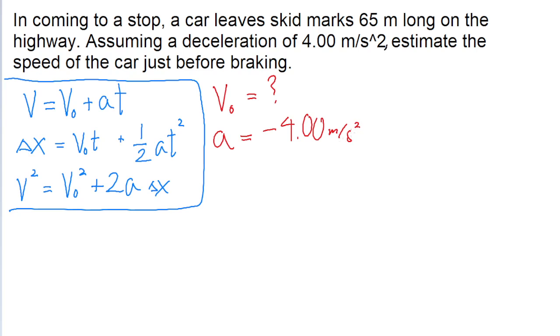The car is decelerating to a stop, so the final speed is assumed to be zero. We're told that the skid marks are 65 meters long, which means the car was braking across that distance. So 65 meters is delta x.